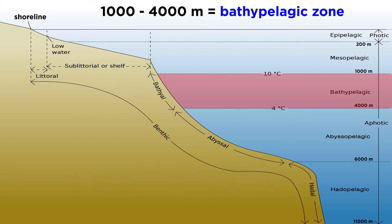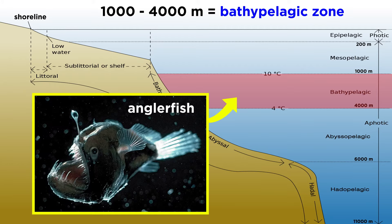Next is the bathypelagic zone, from 1,000 to 4,000 meters. Sunlight certainly can't reach the bathypelagic zone, and the organisms there live in complete darkness, unable to see anything. Some species, like the anglerfish, use the lack of sunlight to their advantage and create specks of light from symbiotic bioluminescent bacteria living at the tip of their dorsal fin to attract prey.